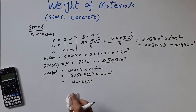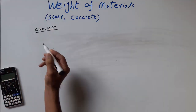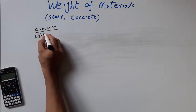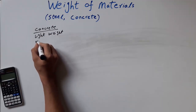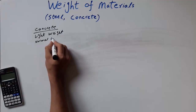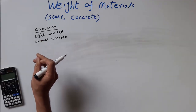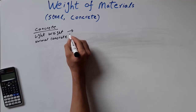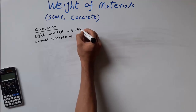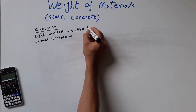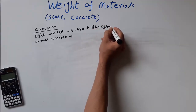Volume multiplied by density will give you the weight of the bar. Now the second material I'm going to cover is concrete. Concrete has two types: one is lightweight concrete and the second is normal concrete. The difference between lightweight and normal concrete is just different density values. For lightweight concrete the density range is 1440 to 1840 kg per cubic meter.